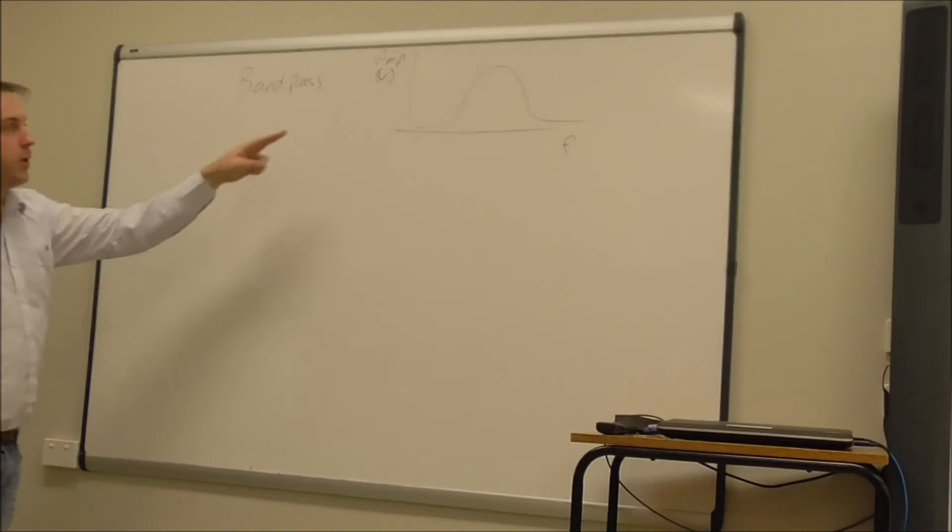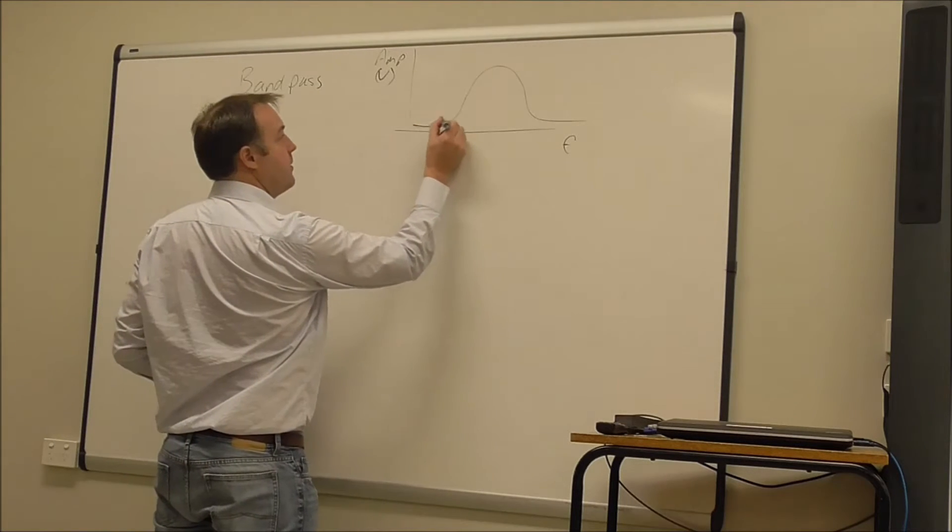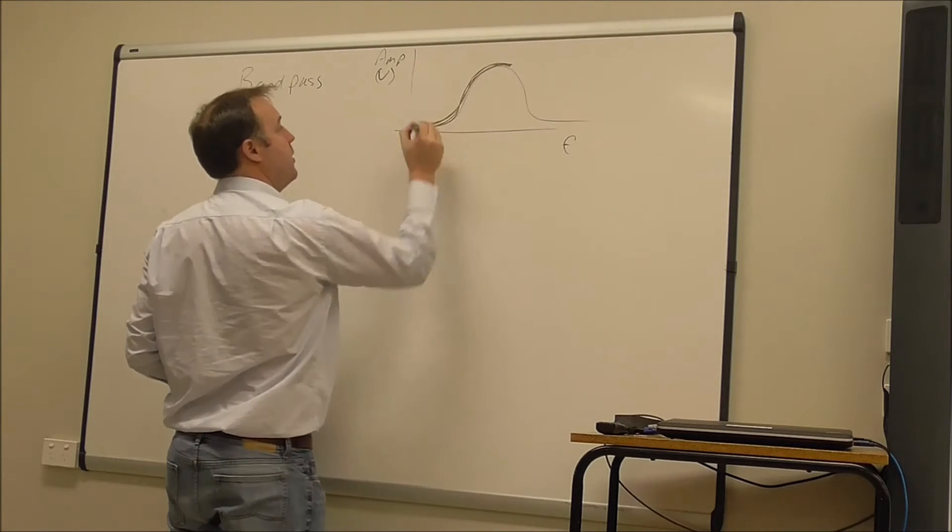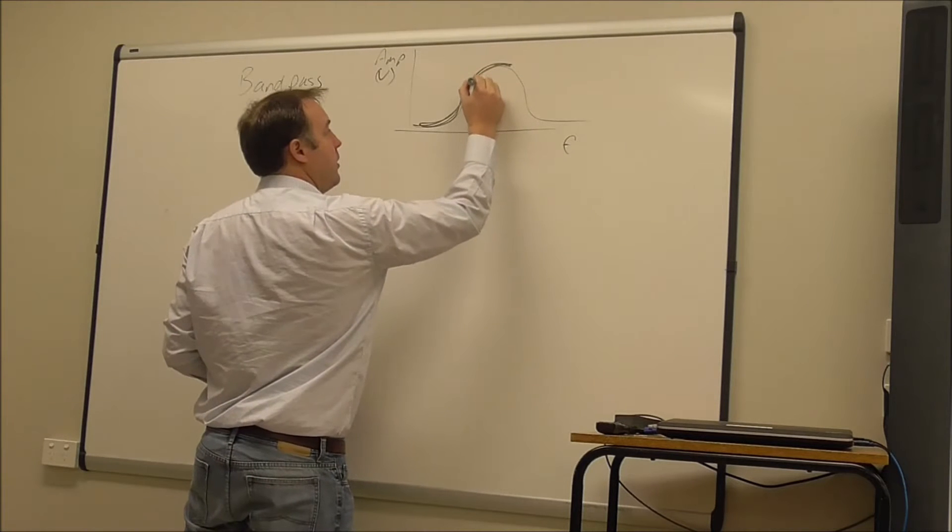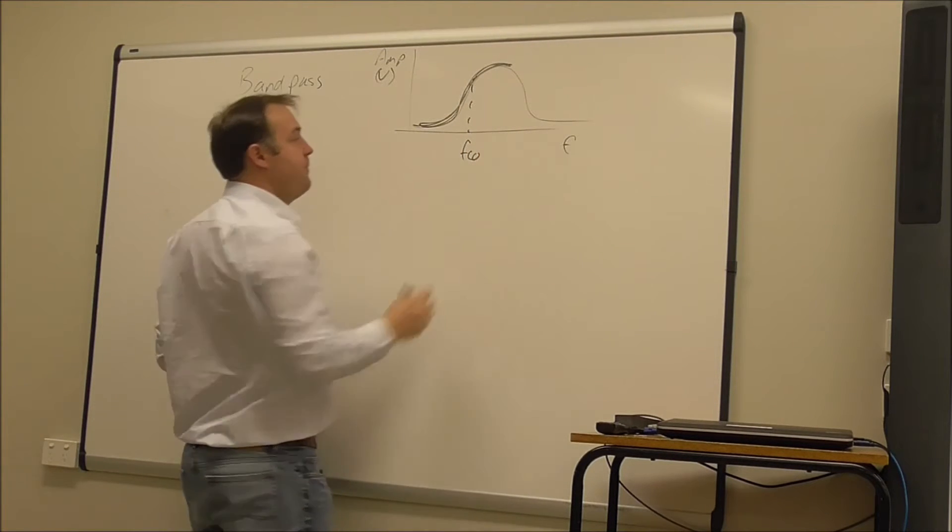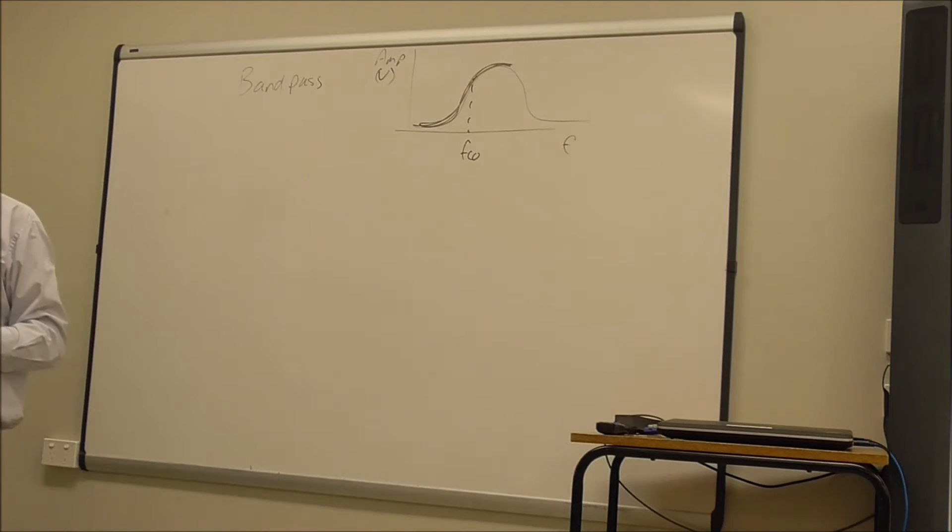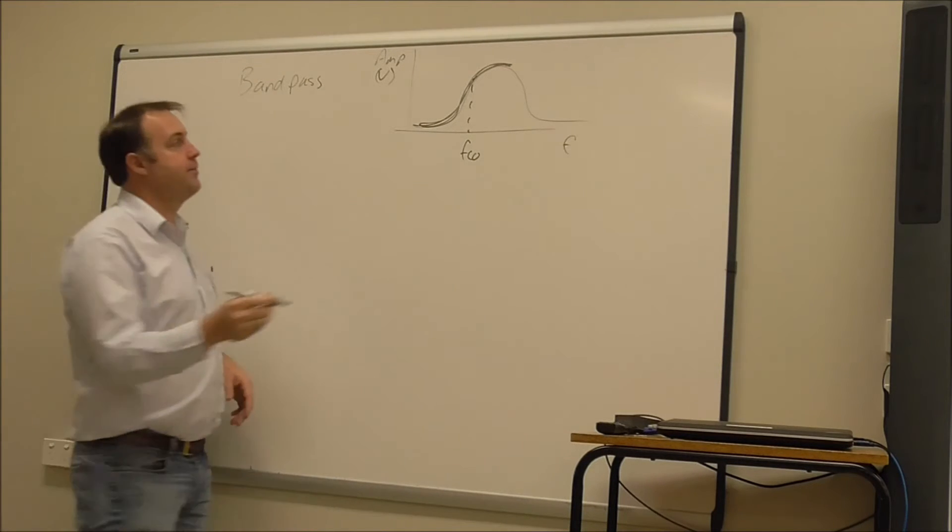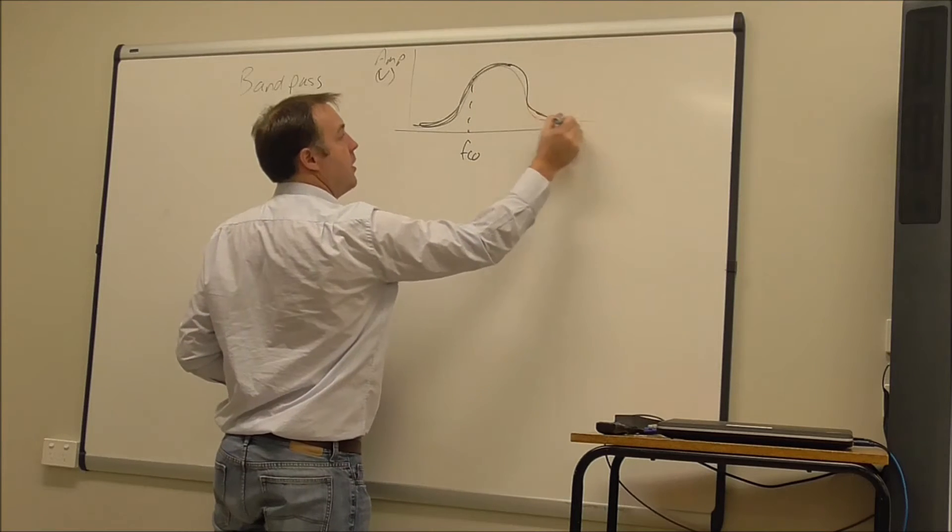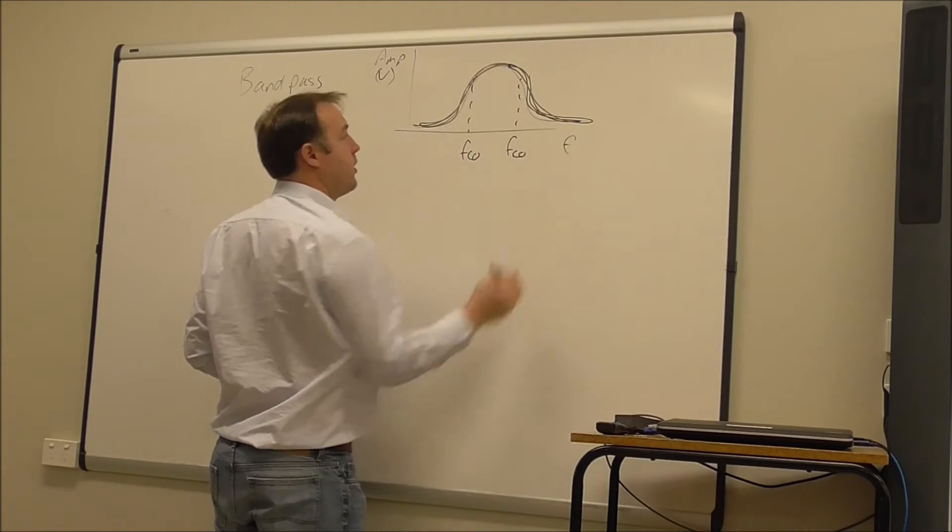So the way that we make one of these is by cascading two filters together, so we can cascade a high pass filter, which would give us this response here from a high pass filter with its cut off frequency, and then we put that, so we maybe have that as input, so that's the first filter we encounter. And then we connect to the output of that filter a low pass filter, which gives us this response, with its associated cutoff frequency.